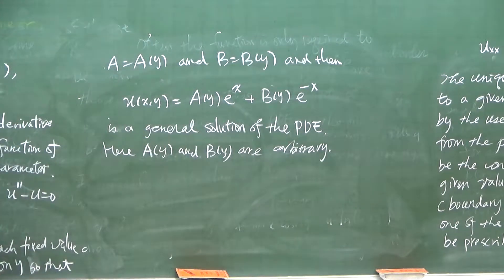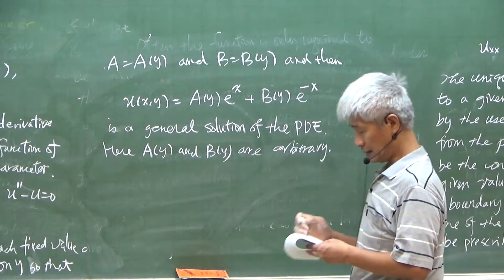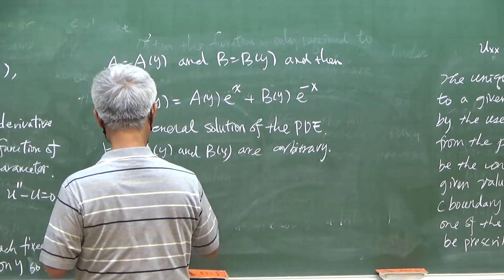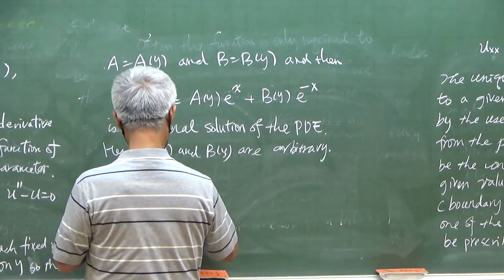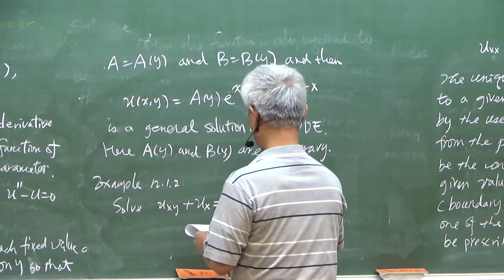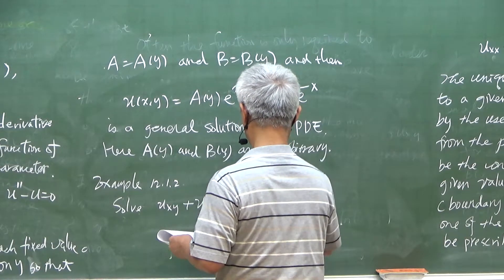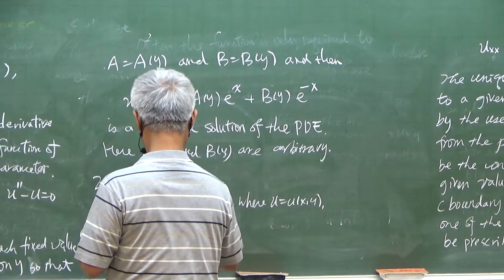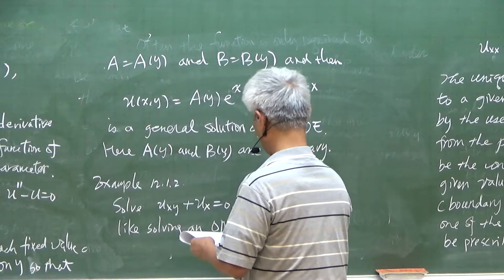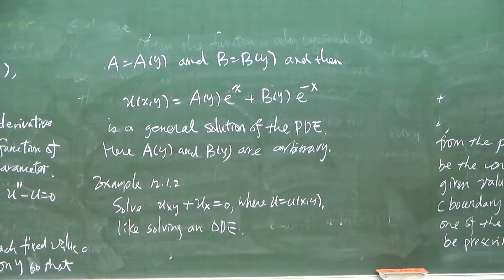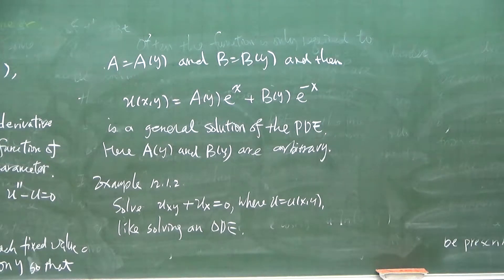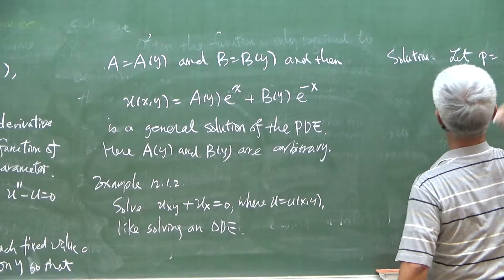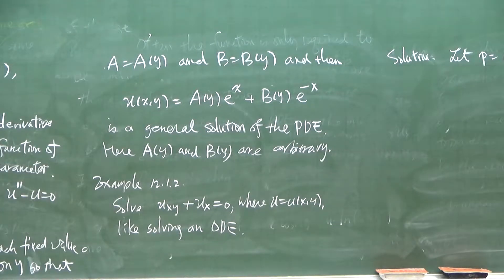Another example: we solve u_xy + u_x = 0. Now if we let p be the first partial derivative of u with respect to x, then we have p_y + p = 0.